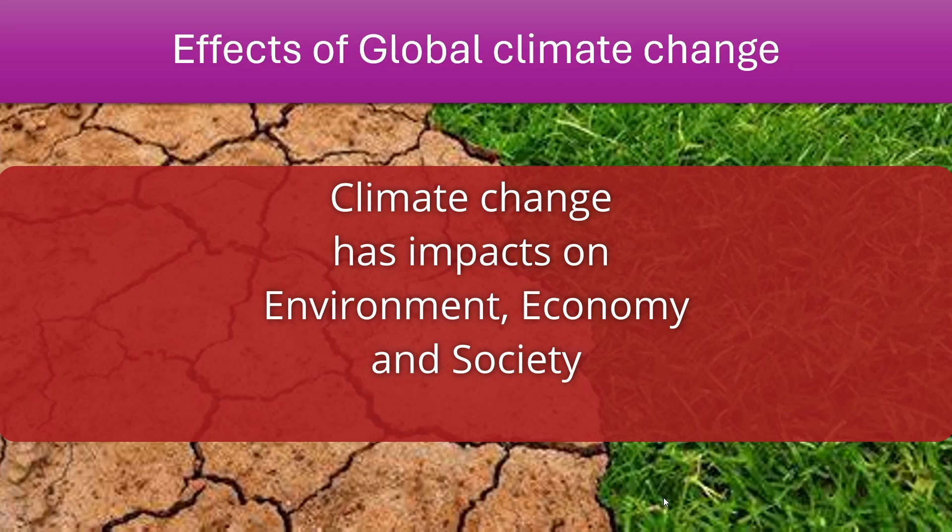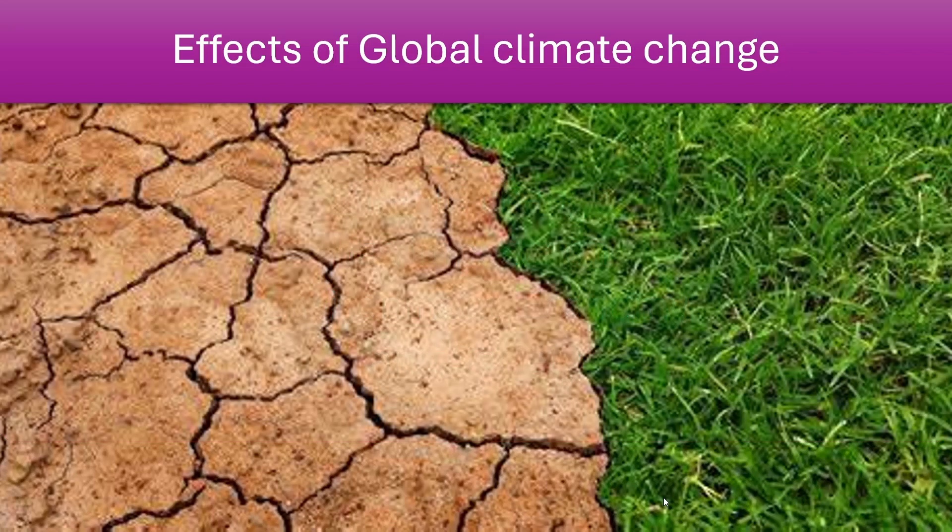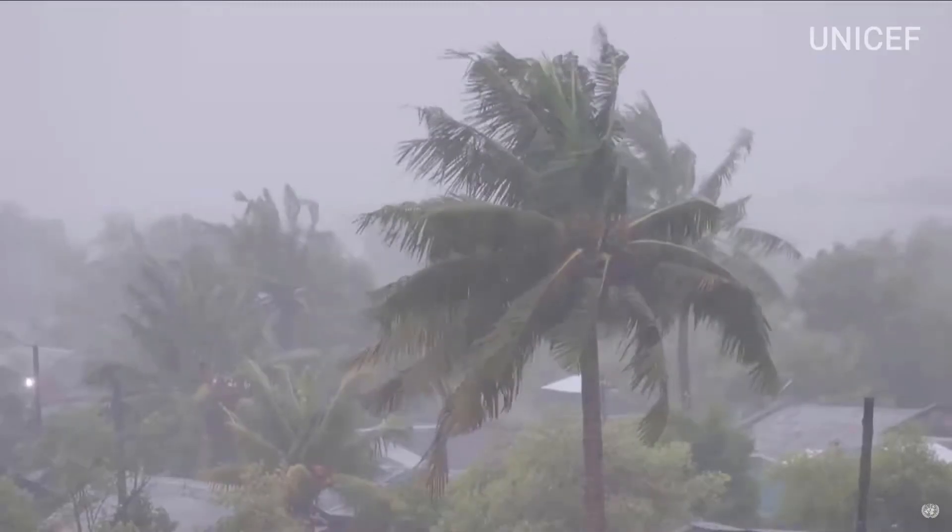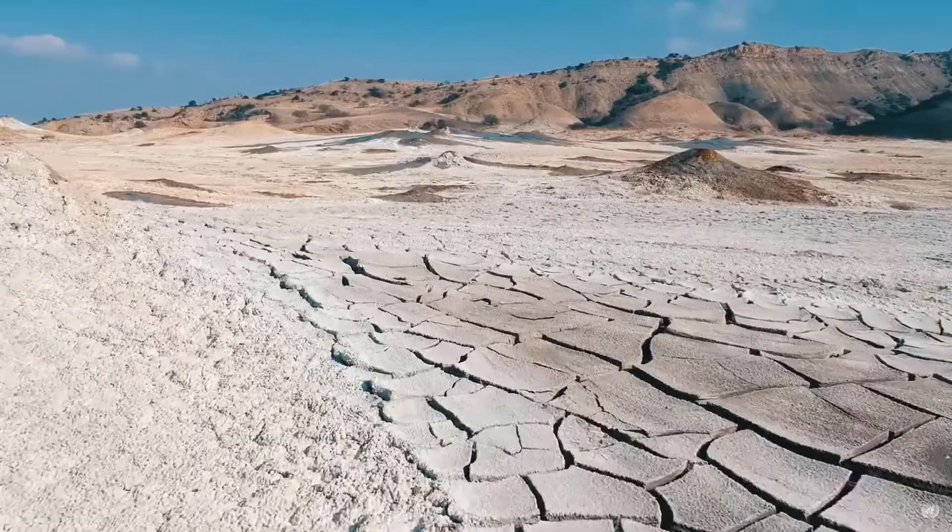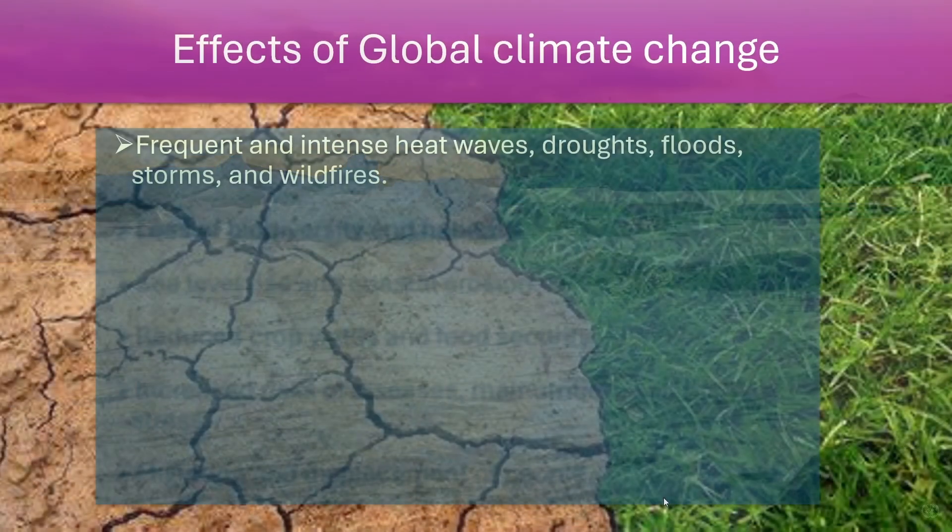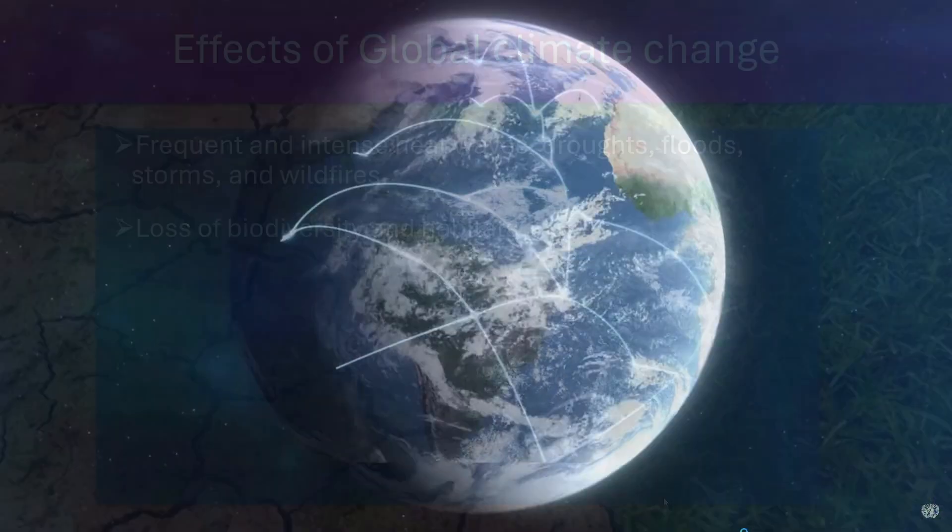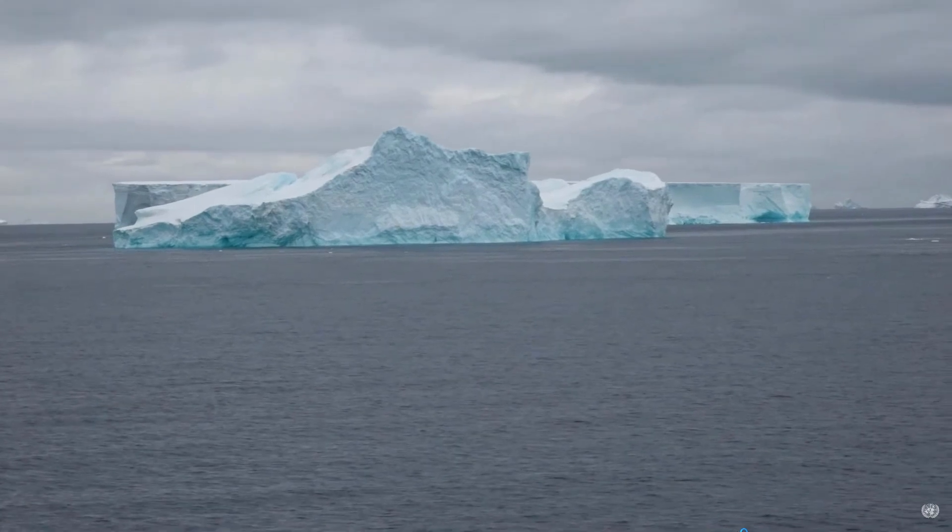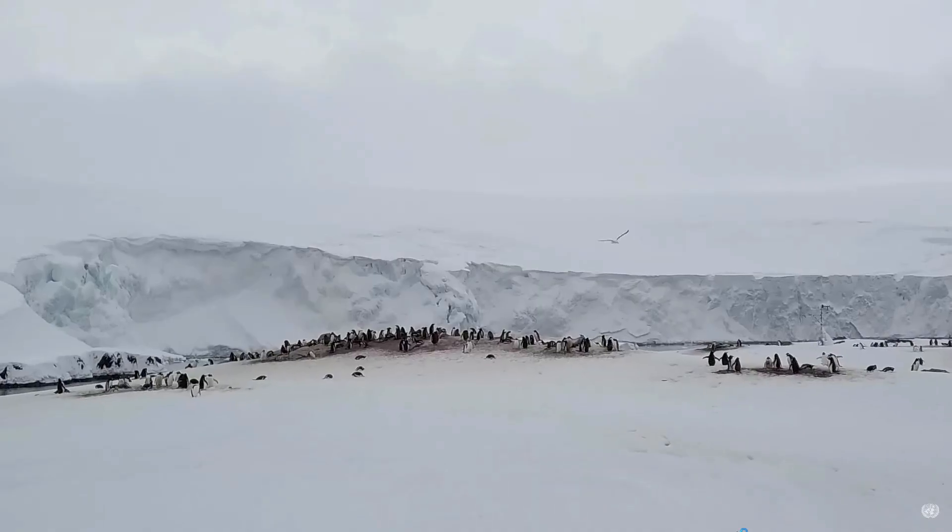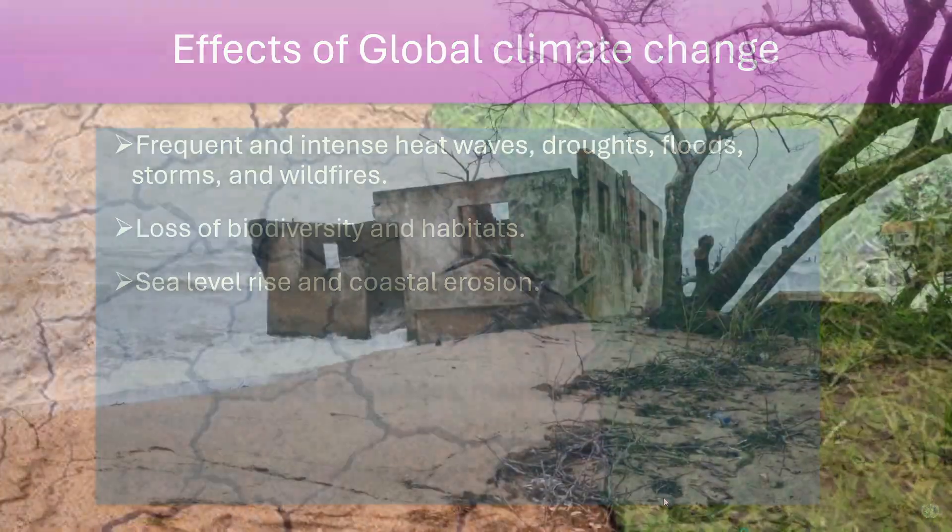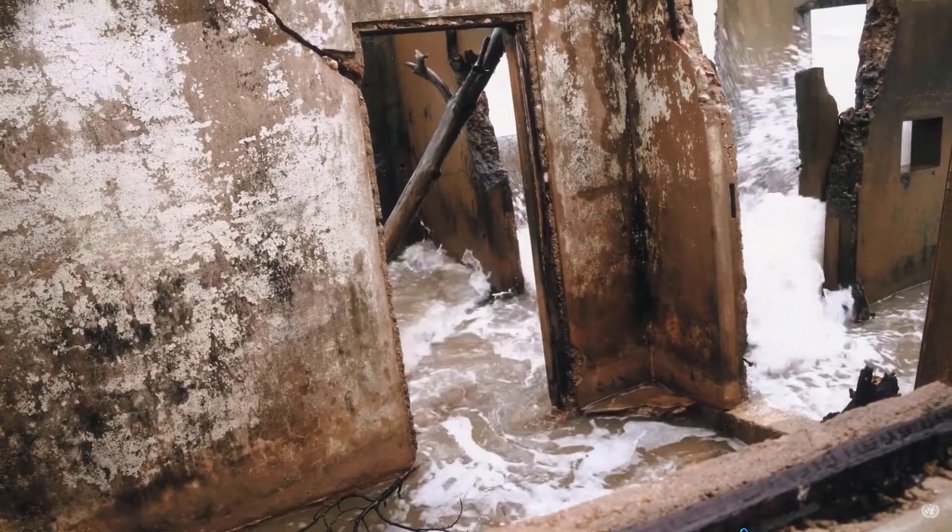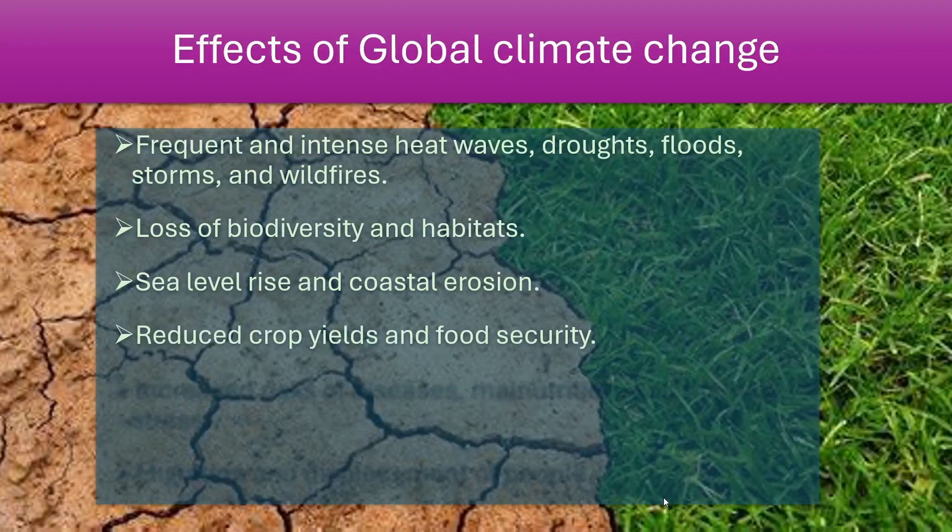Some of the impacts of climate change are more frequent and intense heat waves, droughts, floods, storms, and wildfires; loss of biodiversity and habitat such as coral reefs, forests, wetlands, and polar regions; and sea level rise and coastal erosion threatening millions of people living in low-lying areas.